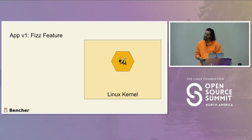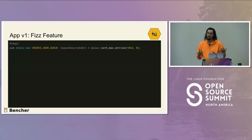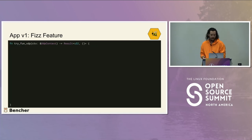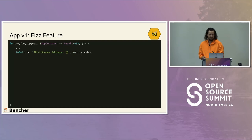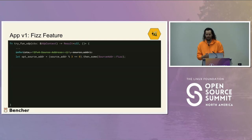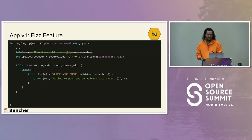On the eBPF side, the change is creating a map — a queue that we push source address messages onto. Then we update tryFunXDP: it's similar to before, but instead of just logging, we do a modulus three check. If the result is zero, we have Fizz, and we push it onto the queue. No matter what, we go ahead and pass the packet.